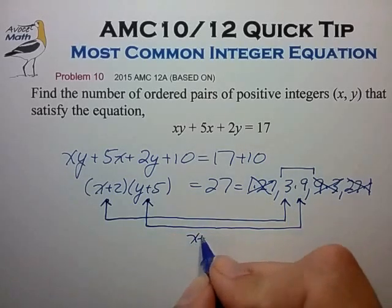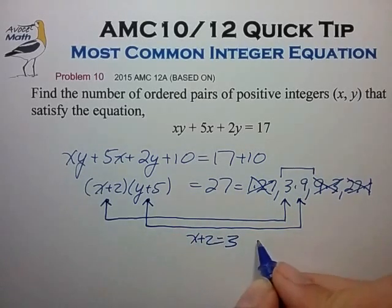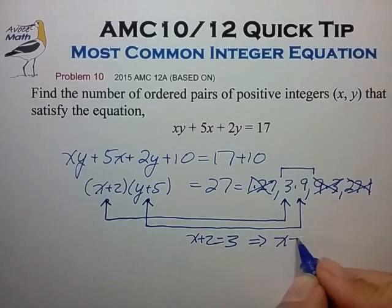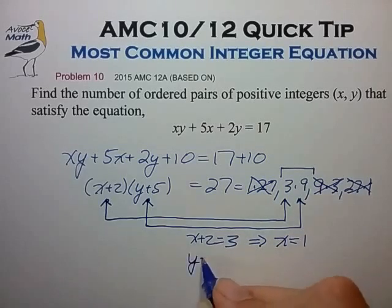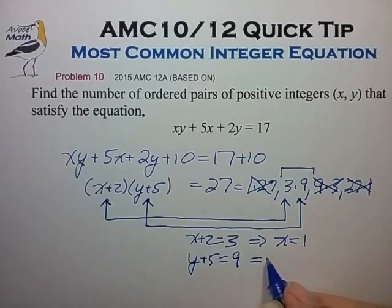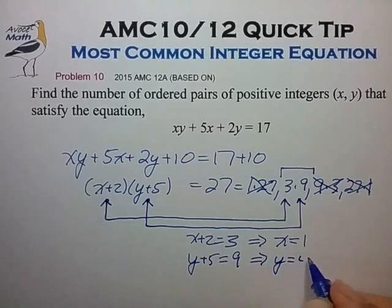From this, we find that x + 2 = 3, so x = 1, and y + 5 = 9, so y = 4.